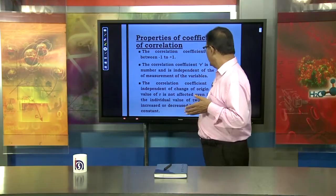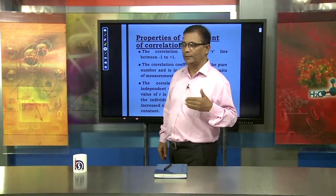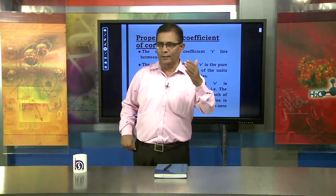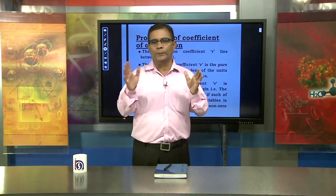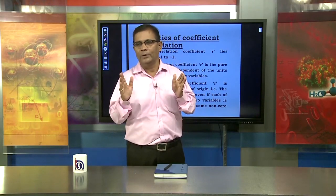The next property: the correlation coefficient R is independent of change of origin. That is, the value of R is not affected even if each of the individual values of the two variables is increased or decreased. If you increase or decrease those values, it has no effect on their relationship.